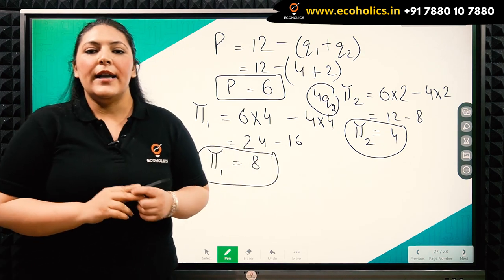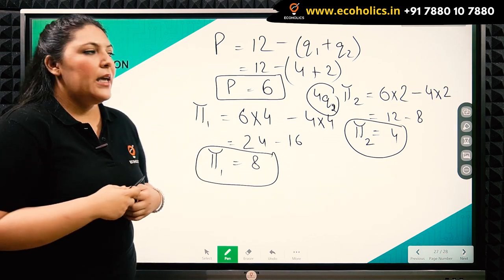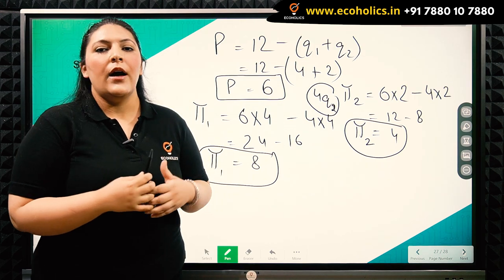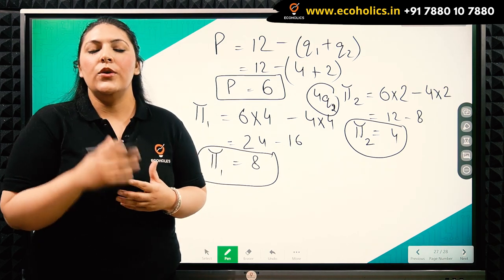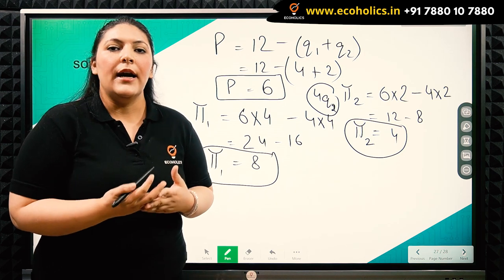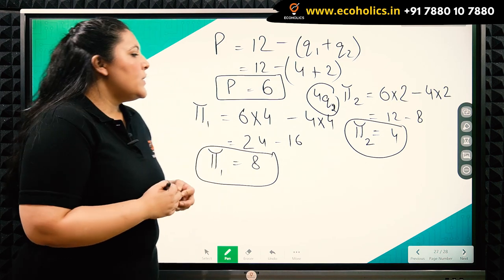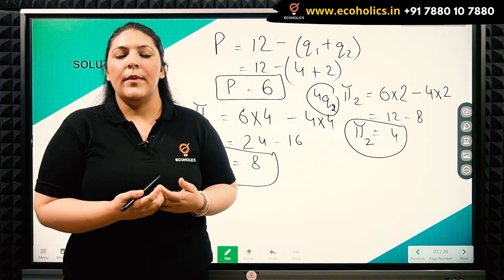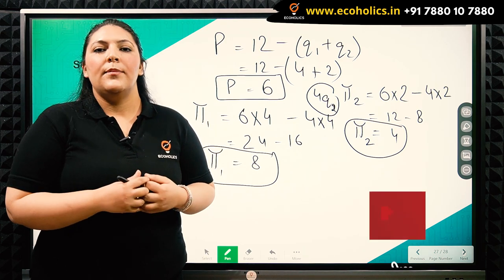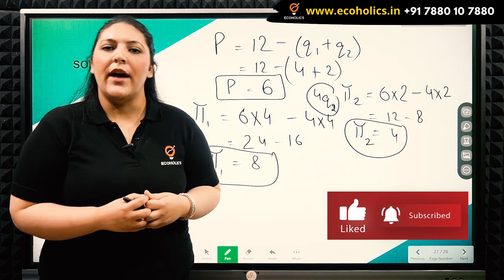In the Stackelberg model, any firm that is able to find out that the other firm is following the Cournot assumption can become a leader and earn extra profits through cost functions. This is how you solve this numerical of the Stackelberg model very easily. For more content, please subscribe to our channel and like and share. Thank you, have a good day.